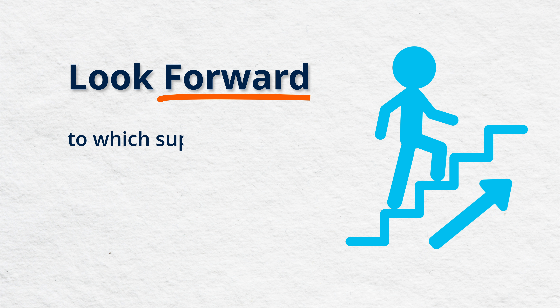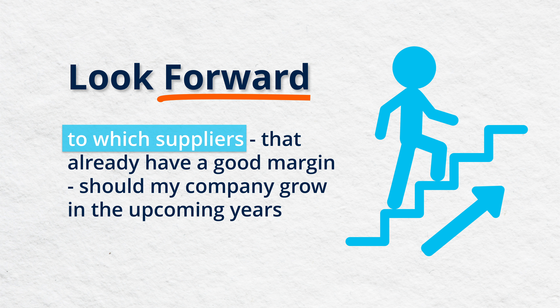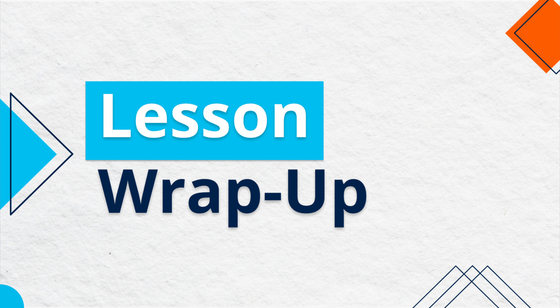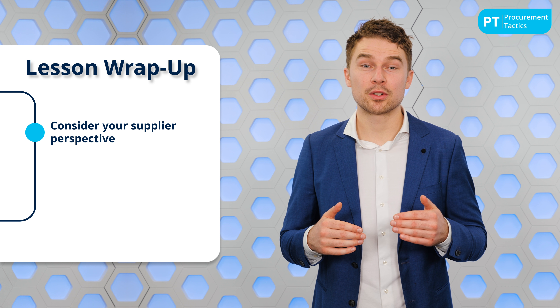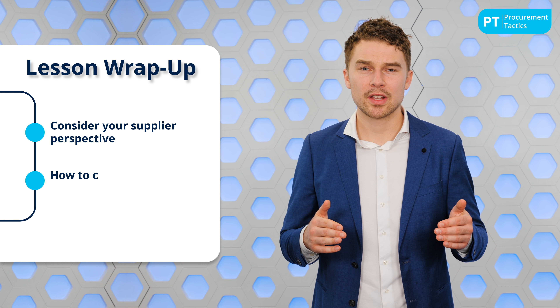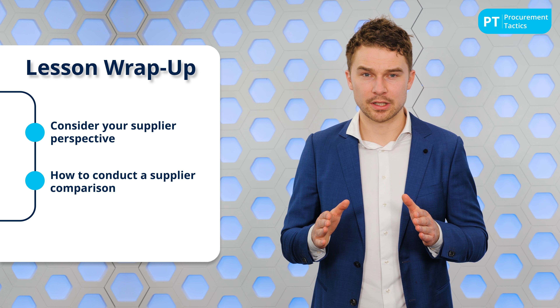Secondly, I looked forward: with which suppliers that already have a good margin should my company grow in the upcoming years? And if we are locked into our current suppliers, how can we grow margin with these suppliers? That wraps up this lesson on the power balance and supplier comparison to include in your negotiation strategy. You first learned to consider your supplier perspective, and you learned how to conduct a supplier comparison to make sure you make the right choices when it comes to growth in the future. The team at Procurement Tactics made a template so you can include the conclusion of your analysis in your personal negotiation strategy. With these steps completed, you can move on to the analysis of different negotiation styles that shape your strategy.